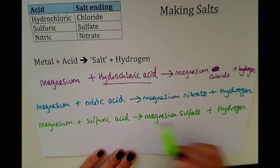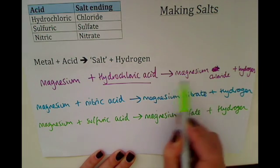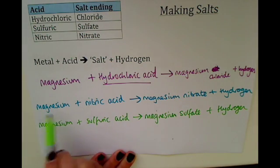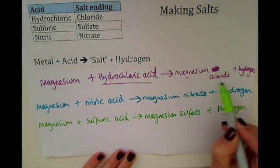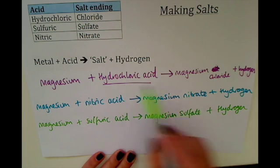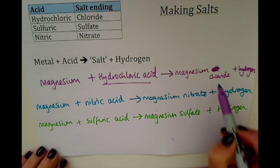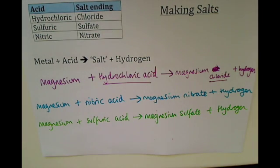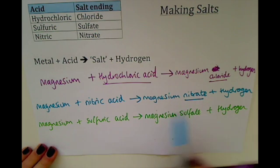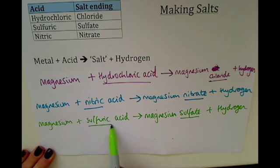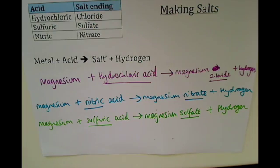With these salts, you just use the first word as the metal that you're using, and the second word will depend on the acid: chloride for hydrochloric acid, nitrate for nitric acid, and sulfate for sulfuric acid.